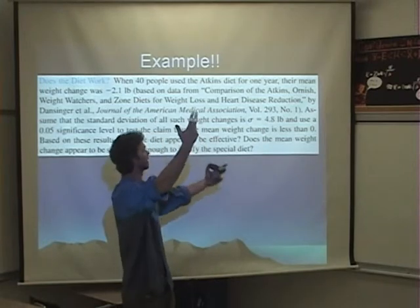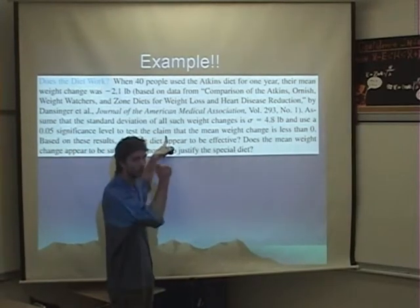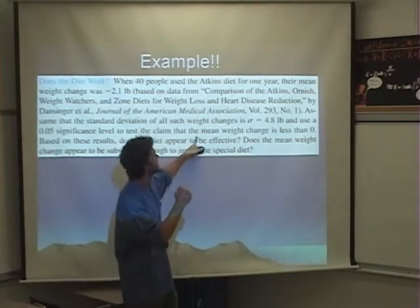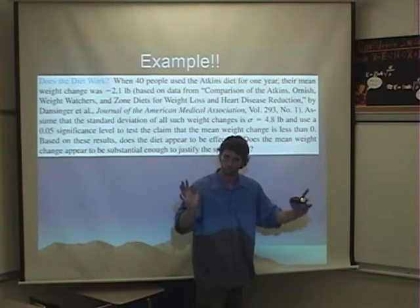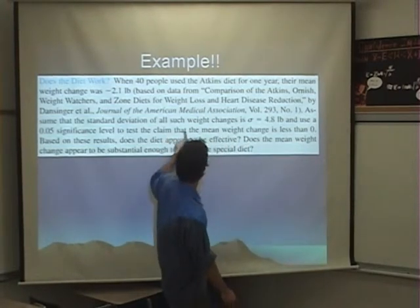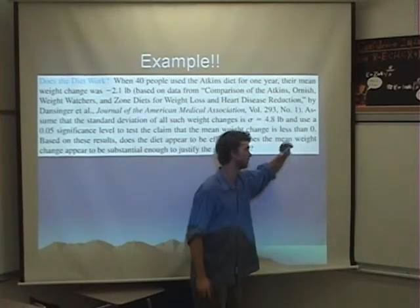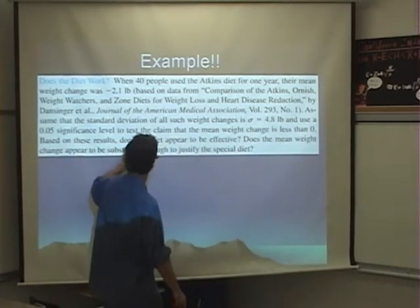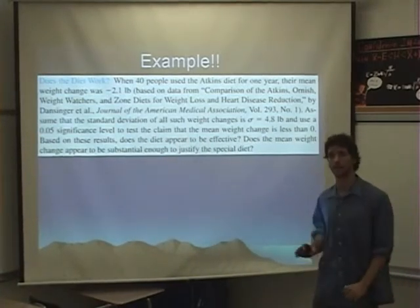So we're going to take a look at the average and use a .05 significance level. I say ding, ding, ding, because that is our alpha. To test the claim, here it comes. Here comes the big information. That the mean weight change is less than zero. Things start coming into your head at that point. I'm going to read this again. But test the claim that the mean weight change is less than zero. So based on these results, does the diet appear to be effective? So we can answer those questions. Afterwards, let's just take the test.